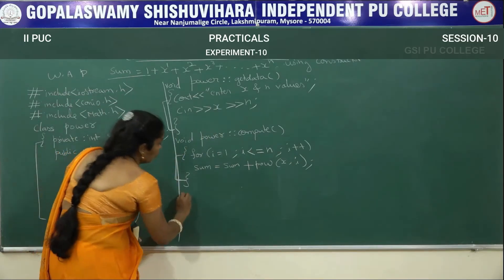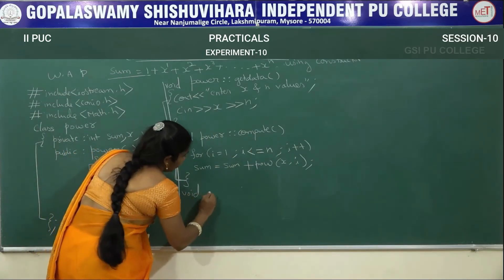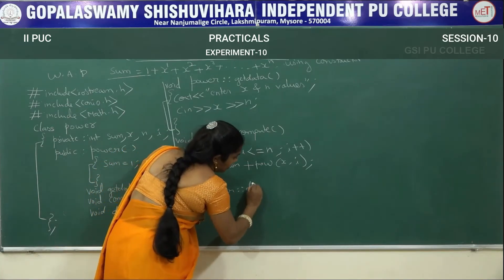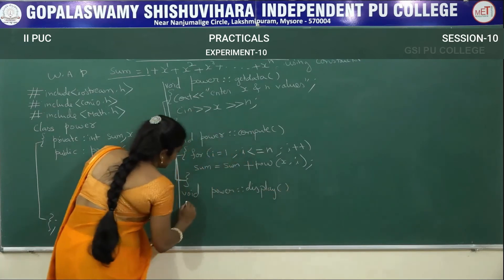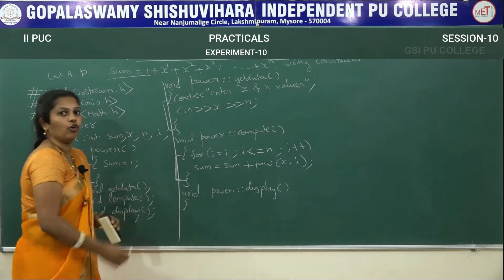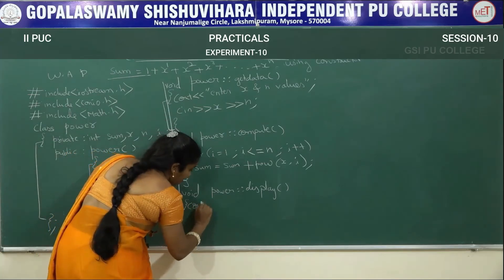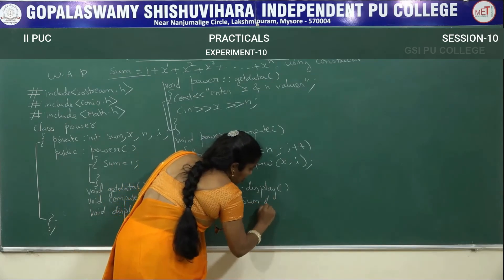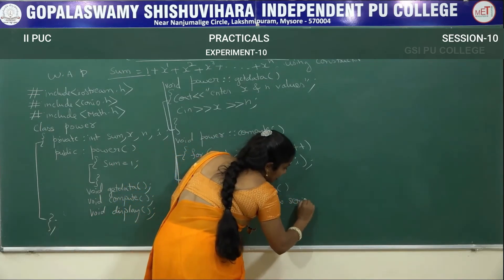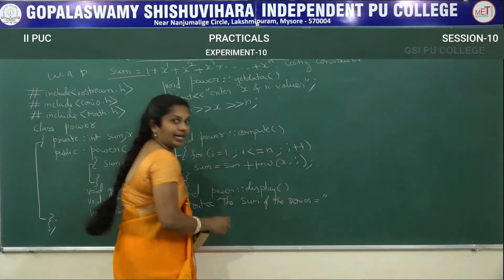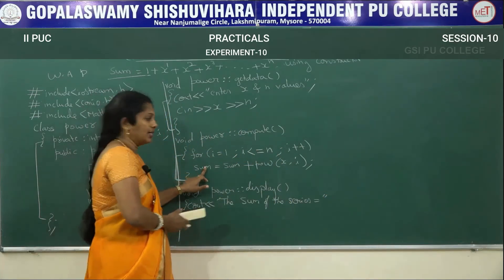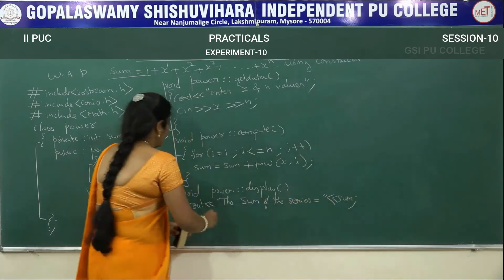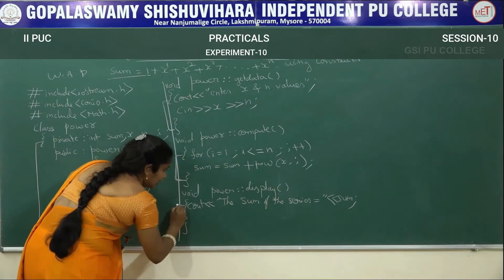Next, write the display function: void power scope resolution operator display. On this display function we want to display the result. That is why cout with insertion operator inside double quotes 'sum of the series equals', then insertion operator sum — because the result is present in sum. Then close this display function.